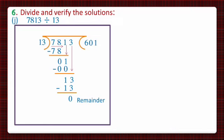So dear students, the term to be divided is known as the dividend, and here it's 7813. The number which divides is known as the divisor, so 13 is our divisor. After division, the answer which we get is known as the quotient, and in this question 601 is our quotient.